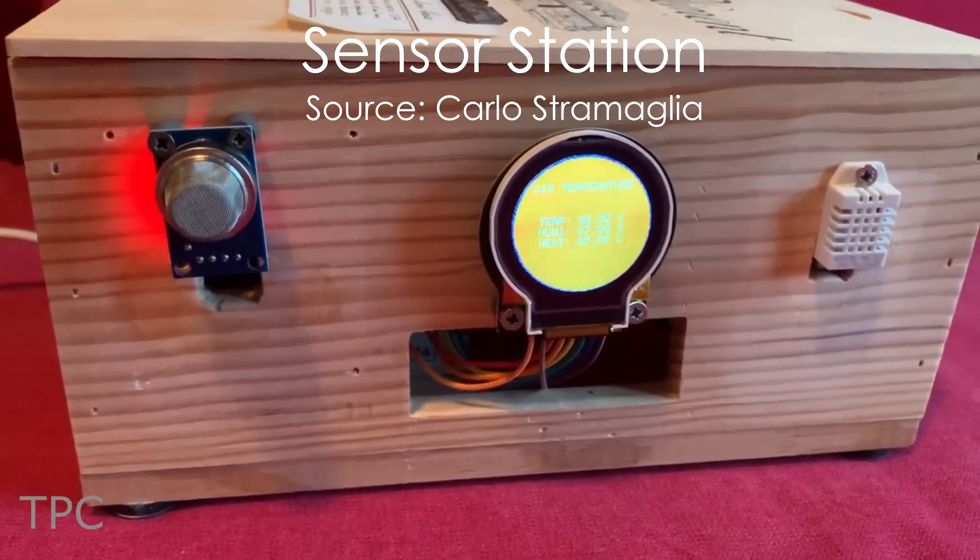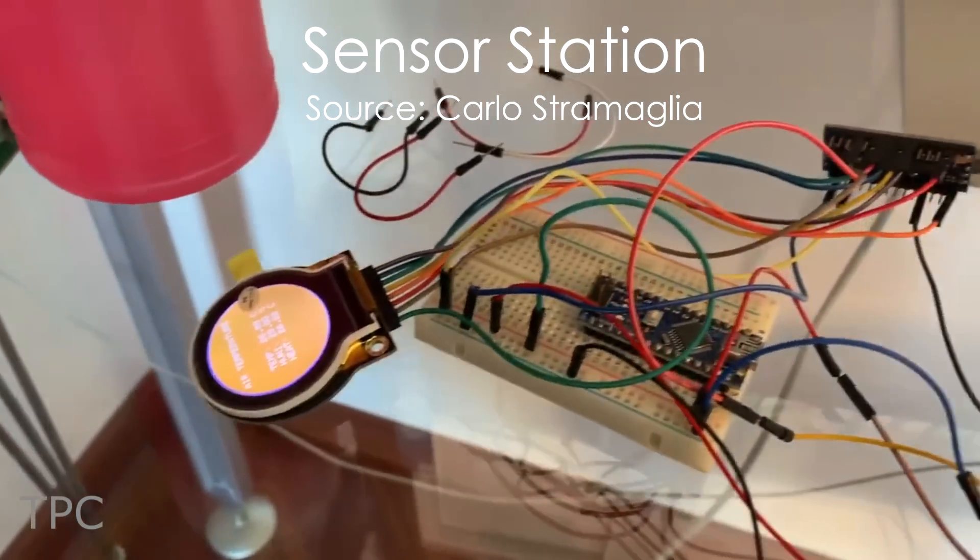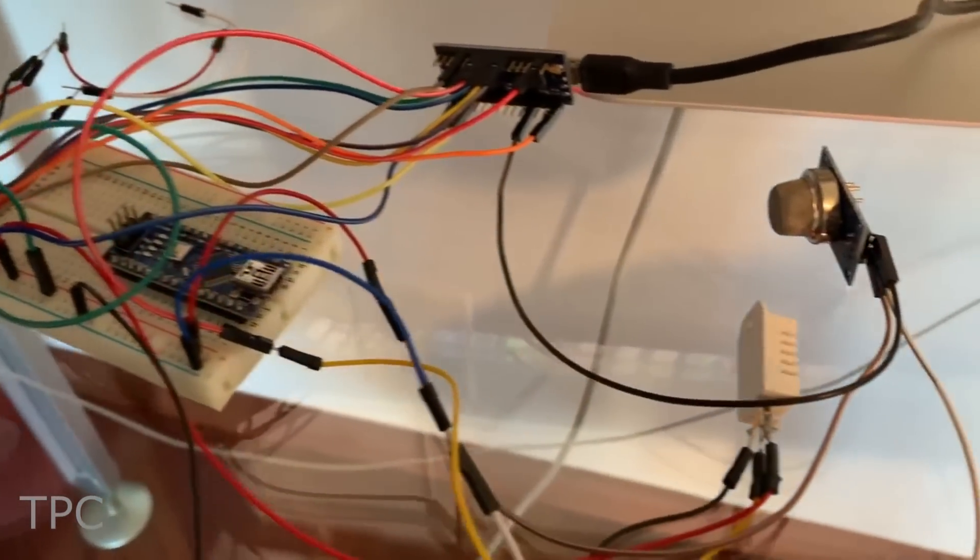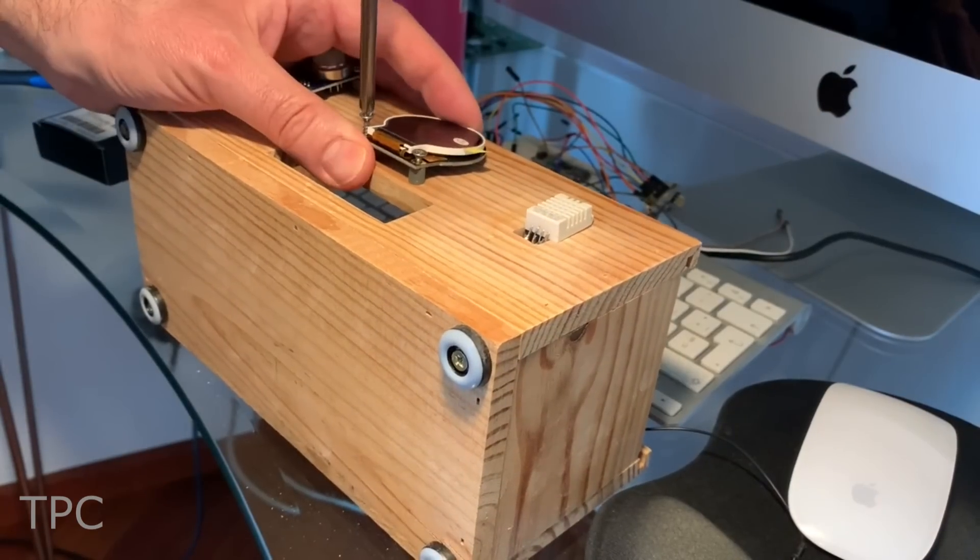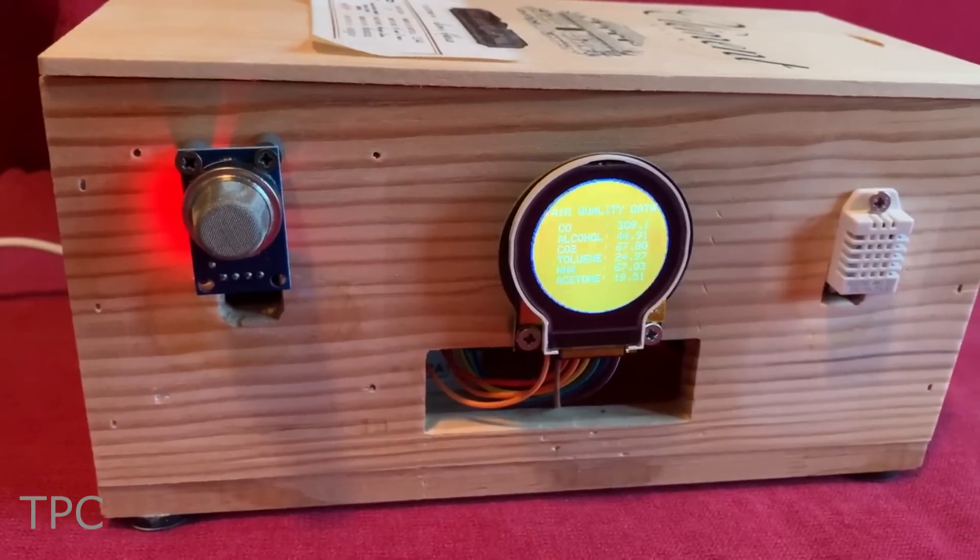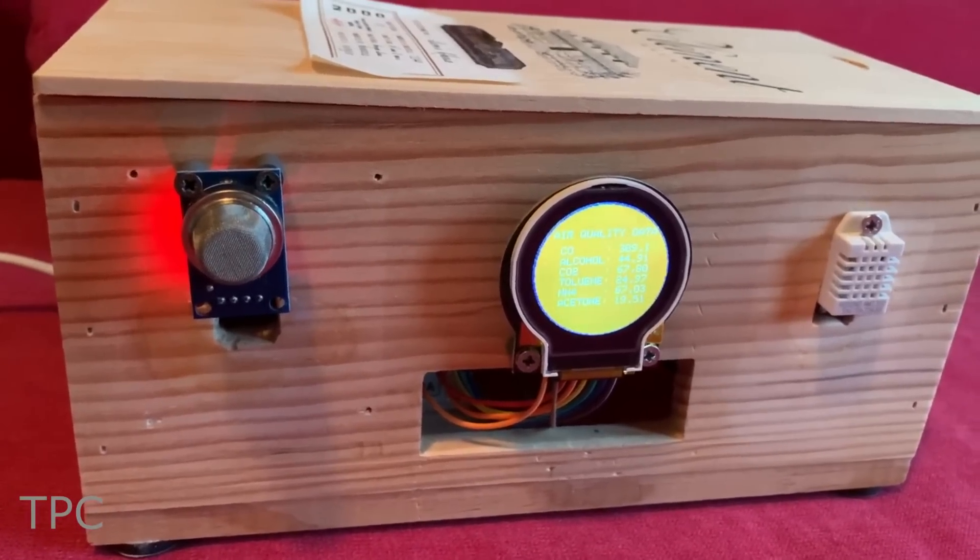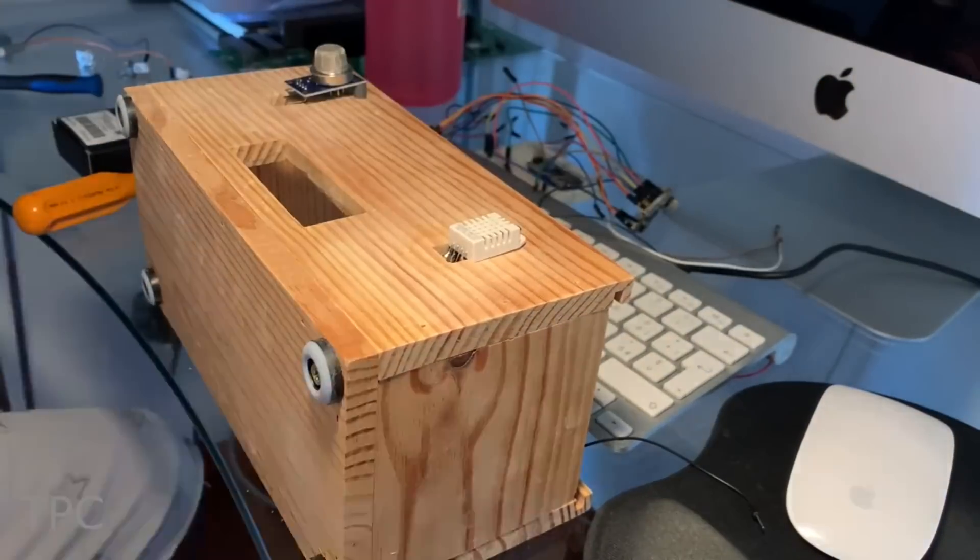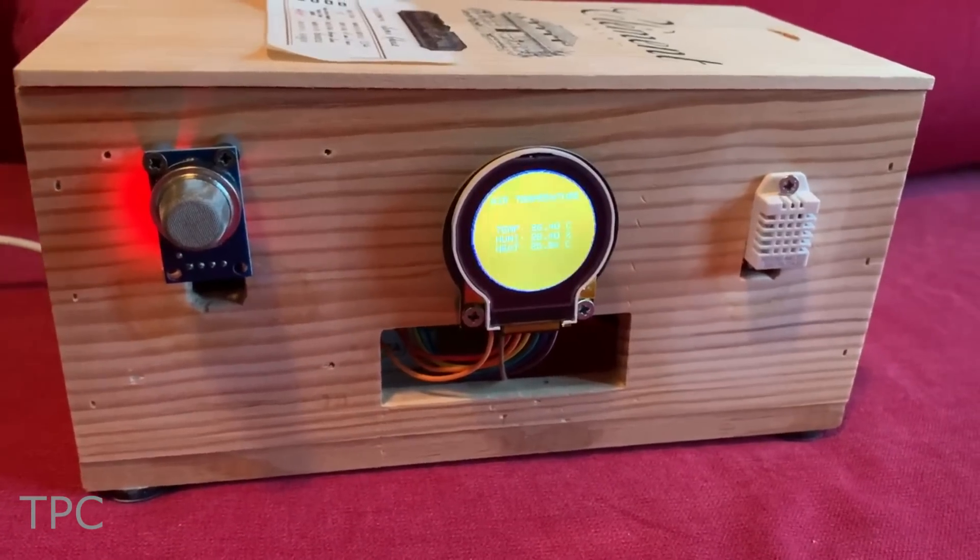This is a simple air quality monitoring station that monitors temperature, humidity, and other gases in its ambient. A round screen is placed in the middle of a wooden box, which displays the measured values obtained from the sensors. The sensors are placed on either side of the screen, giving the project a decent look.